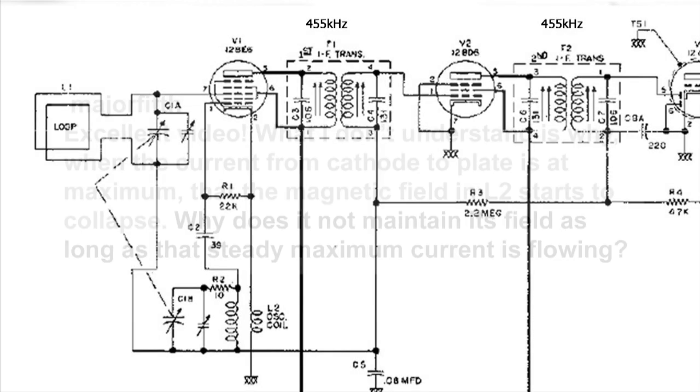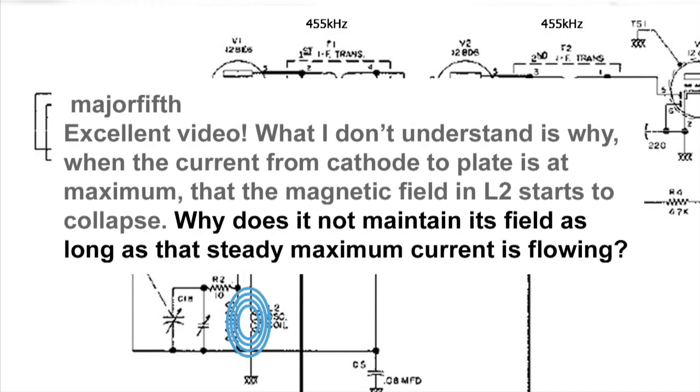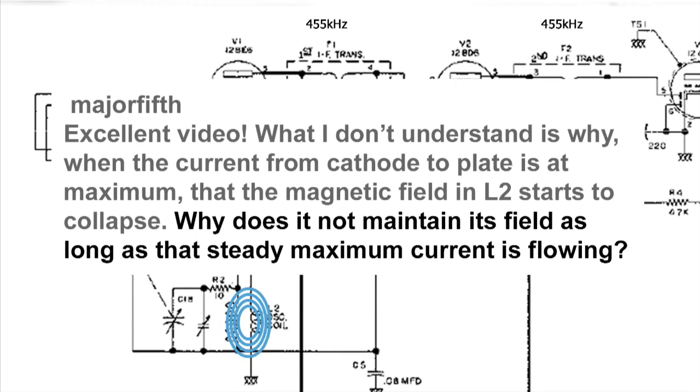I got this question about oscillator circuits, LC circuit, tank circuit, and he's wanting to know why the magnetic field doesn't remain steady with maximum current flow.